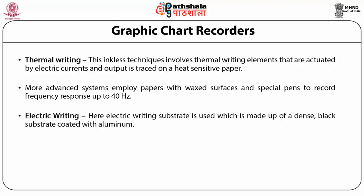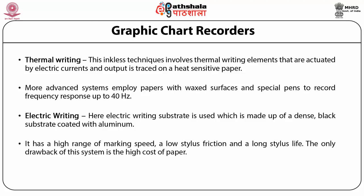In electric writing, an electric writing substrate made of a dense black substrate coated with aluminum is used. A tungsten wire stylus is kept in light contact with the aluminum surface. When voltage is applied, the aluminum is etched and the black substrate is exposed. A minimum of 35 V DC is applied at a frequency of 8 Hz to avoid possible grounding via the aluminum chart. This system offers a high range of marking speed, low stylus friction, and long stylus life; its only drawback is the high cost of paper.